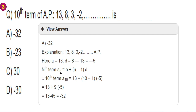For the 10th term: a(10) equals 13 plus (10 minus 1) into minus 5, which equals 13 plus 9 into minus 5, equals 13 minus 45, equals minus 32. So option A is the right answer.